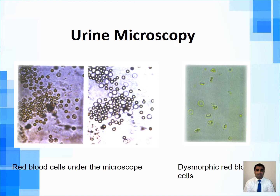The red cells that occur due to glomerular causes become dysmorphic because they traverse the various membranes. To say definitively that there are significant dysmorphic red cells, as high as 70–80% of the cells should be dysmorphic to be absolutely certain this is glomerular hematuria. If the dysmorphic cell percentage is less than 20%, that usually excludes a glomerular cause.